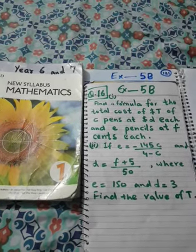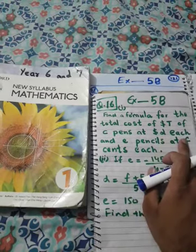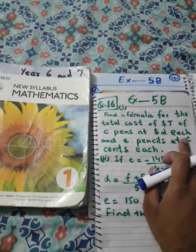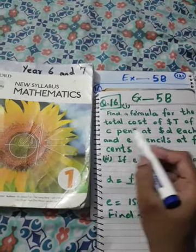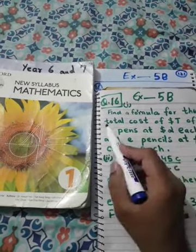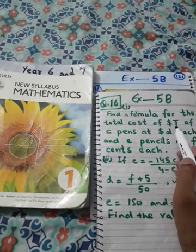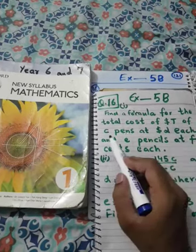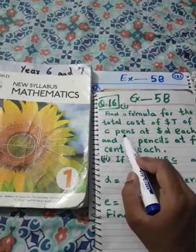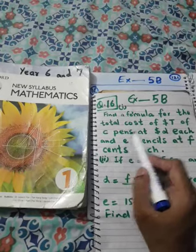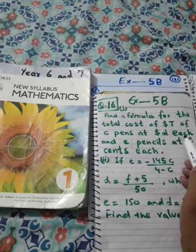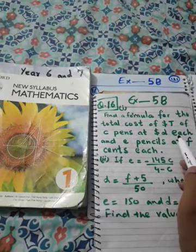So let's start. Find a formula for the total cost dollar T — that means cost will be shown by the letter T — of C pens at dollar D each. What does this mean? That we have to find a formula for the total cost of C pens. C pens means this is the quantity of the pens; at dollar D each means this is the cost of each pen.